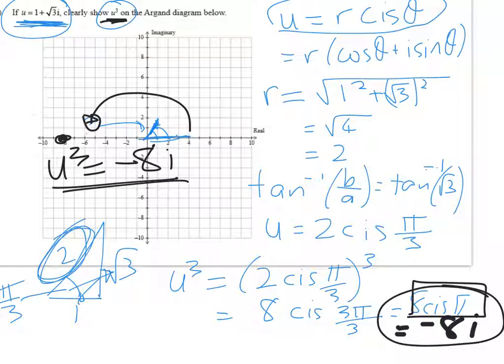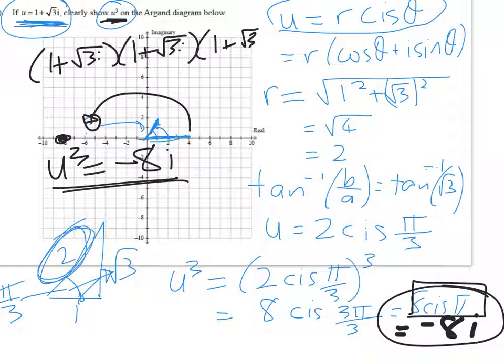Now you will get there if you just instead do 1 plus root 3i times 1 plus root 3i times 1 plus root 3i. But the chances that you muck it up along the way are higher than if you just turn it into polar form first. On to the next question.